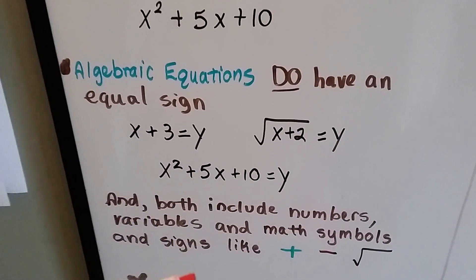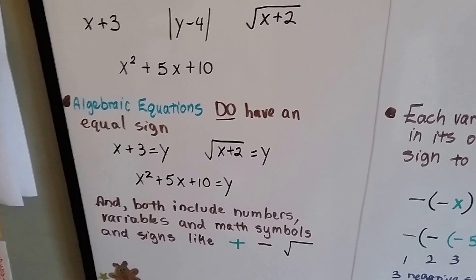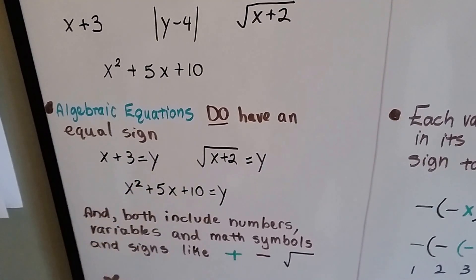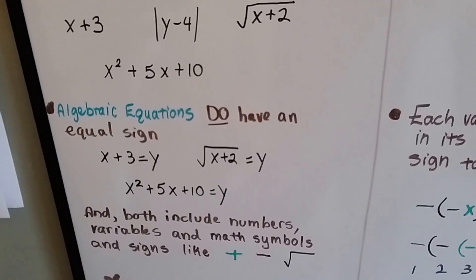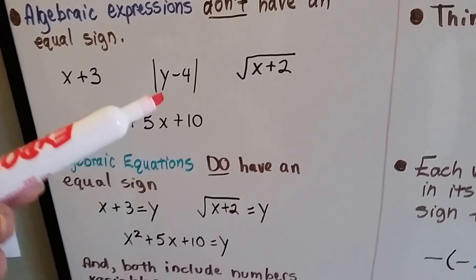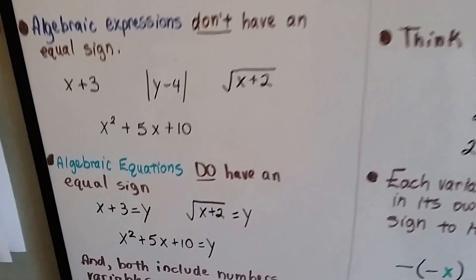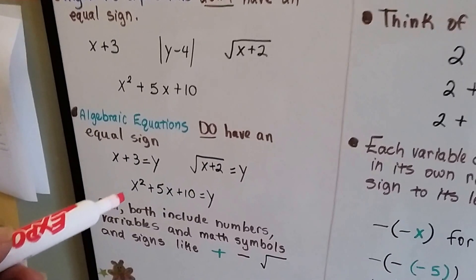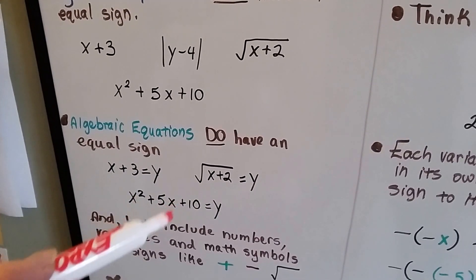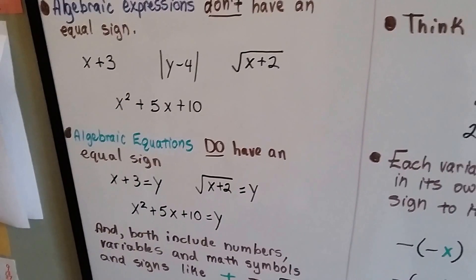Both equations and expressions include numbers, variables, and math symbols and signs, like plus, minus, square root, radical sign. They can even have absolute value signs. The only thing that's different is one doesn't have an equal sign and one does. They both have terms — this has three terms separated by plus signs. Each term is separated by a plus or minus sign.